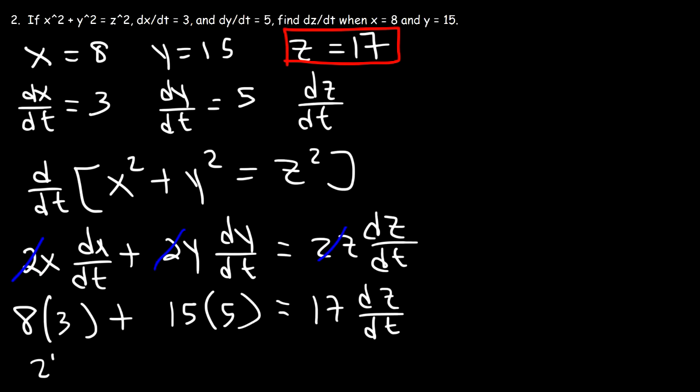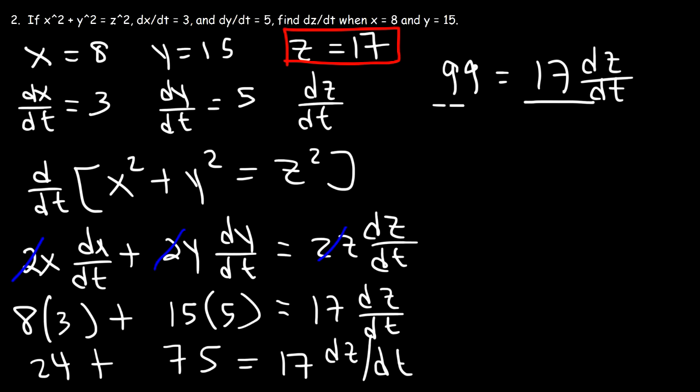8 times 3 is 24. And 15 times 5. 10 times 5 is 50. 5 times 5 is 25. 50 and 25 adds up to 75. 24 plus 75, that's 99. And that's equal to 17 times dz dt. Now, let's divide both sides by 17. So dz dt is 99 over 17 when z is positive 17.